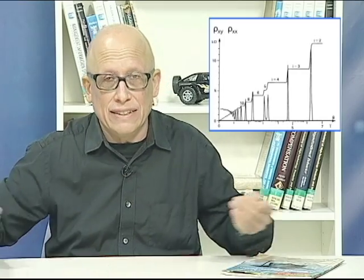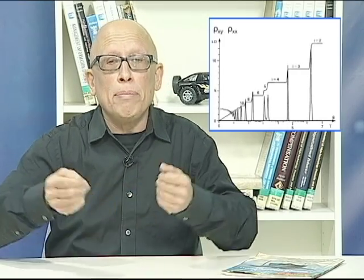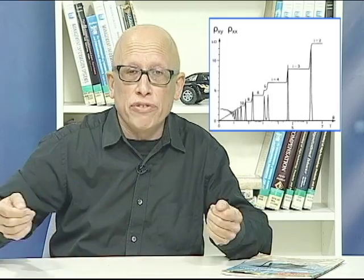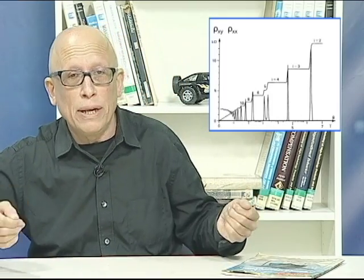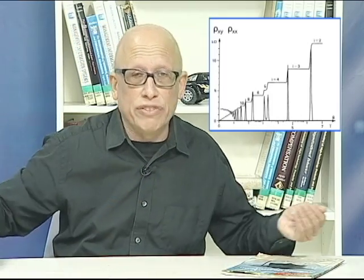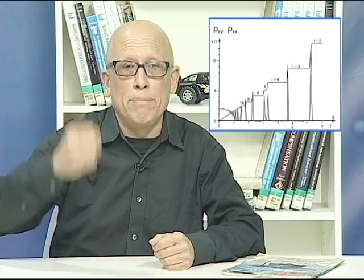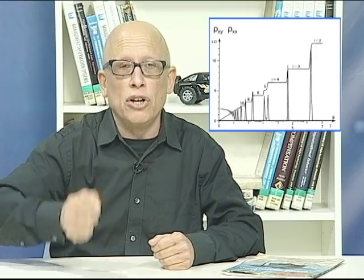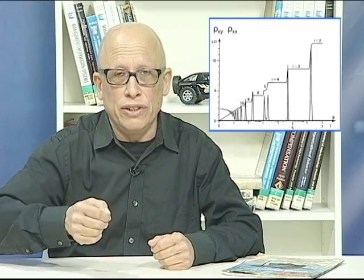Think about it. It is independent of details — such as the material used, the shape of the sample, the name of the experimentalist, or the day of the week. This is what we call a topological number, a topological phenomenon.